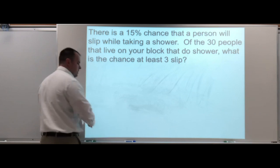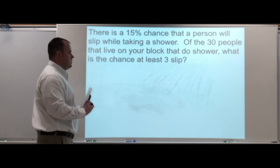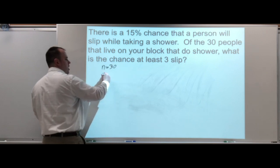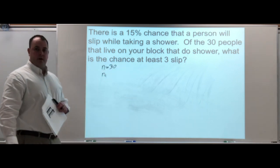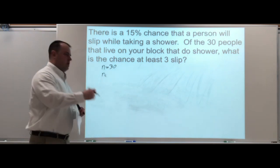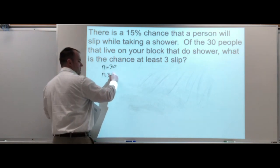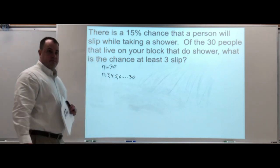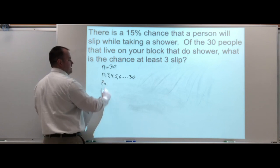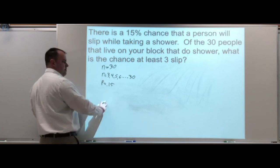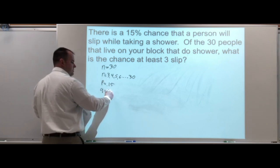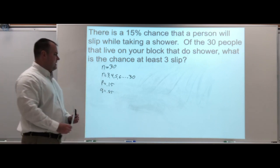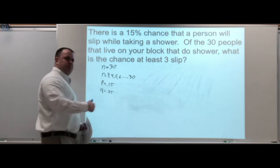We have our set number of trials which is 30, and now our r is at least three. That means we start at three, four, five, six, all the way up to 30. Our p is 0.15, 15%, and our q is 85%.